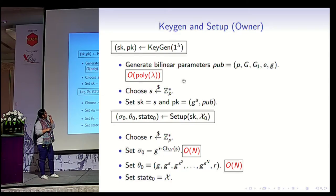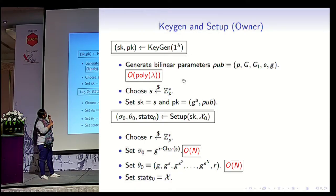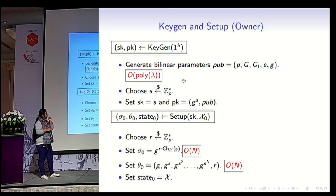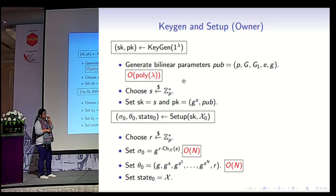The KeyGen and Setup are run by the owner. In the KeyGen phase, the owner takes a security parameter as input, generates public parameters for the bilinear map, and chooses a secret s from Z_p*, which is its secret key. The public key is g^s along with the public parameters. For setup, the owner takes the set X_0 as input, chooses a blinding factor r, and the accumulation sigma_0 is g^{r · ch(s)}, the characteristic polynomial of the set evaluated at s. The authentication information outsourced to the server is the string g^s up to g^{s^n}, along with the randomness. For updates, the owner maintains its internal state by remembering the entire set.